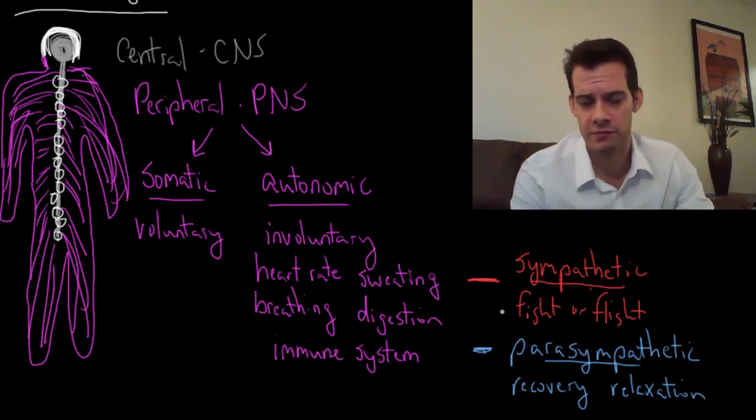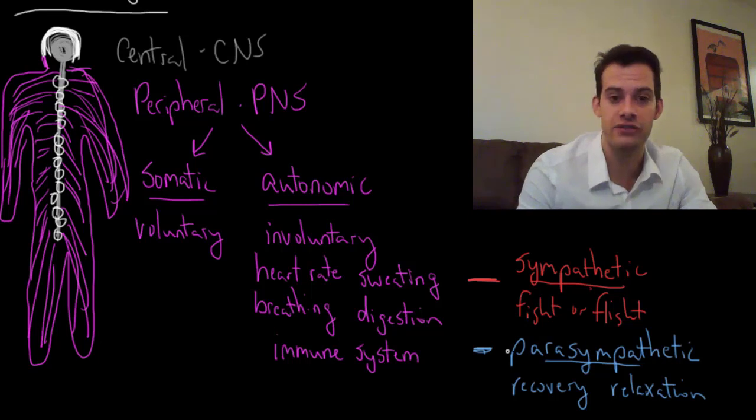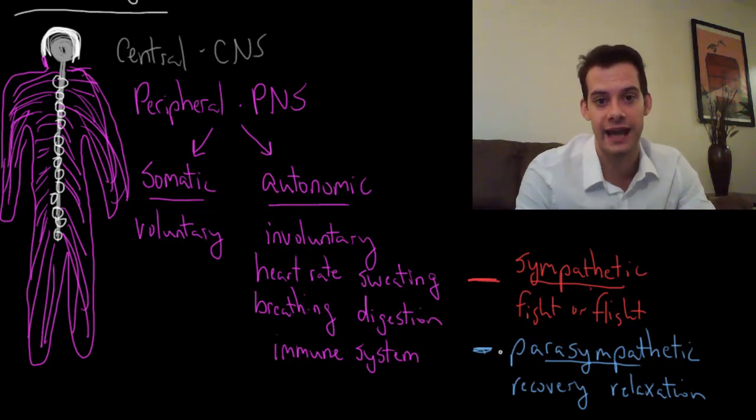Now I said we don't have conscious control over these processes, and that's mostly true. But of course we can choose certain behaviors. We can put ourselves in situations that are going to activate one of these two systems. I can choose to put myself in more threatening situations and have more sympathetic activation. On the other hand, I can also choose to recover and relax. I can try to put myself in situations that encourage parasympathetic activation. If I sit quietly, that encourages parasympathetic activation. If I take up a practice like meditation, that's going to improve this process of activating the parasympathetic system.